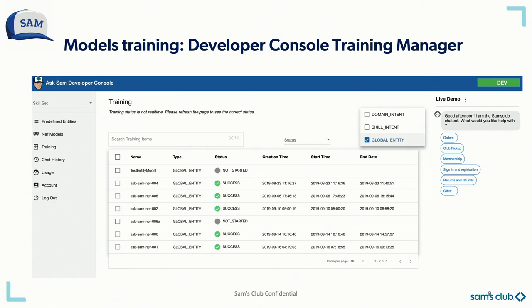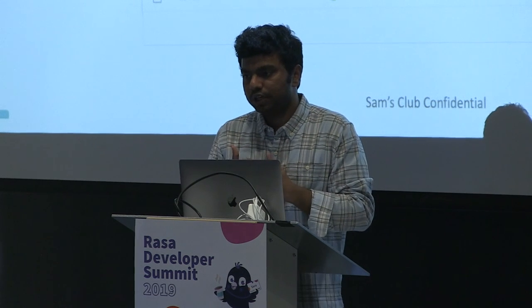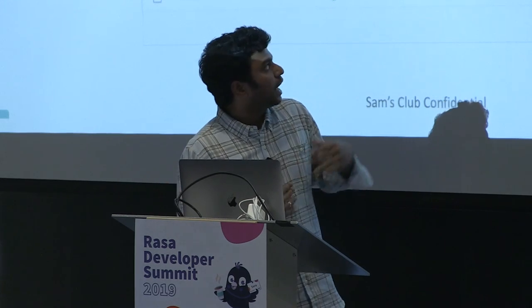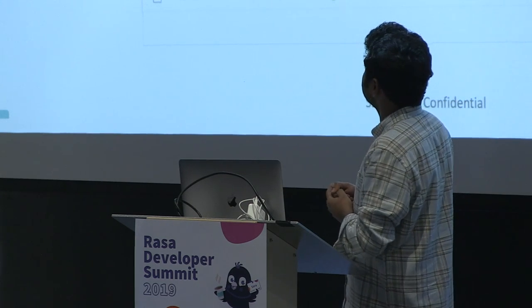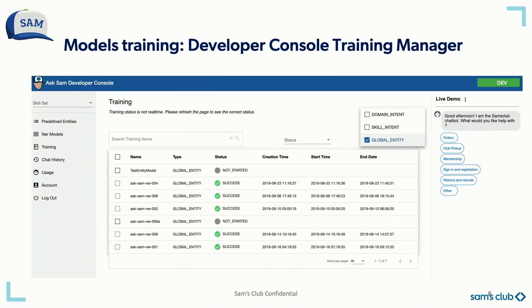The next problem is that it is always confusing to manage multiple models — there are two types: intent classification models, which classify a given text to an intent, and entity extraction models. To address this, we developed a training manager that allows us to kick off jobs for entity models, global entity models, and intent models, so we can start whichever type of model we want to retrain and monitor the statuses.